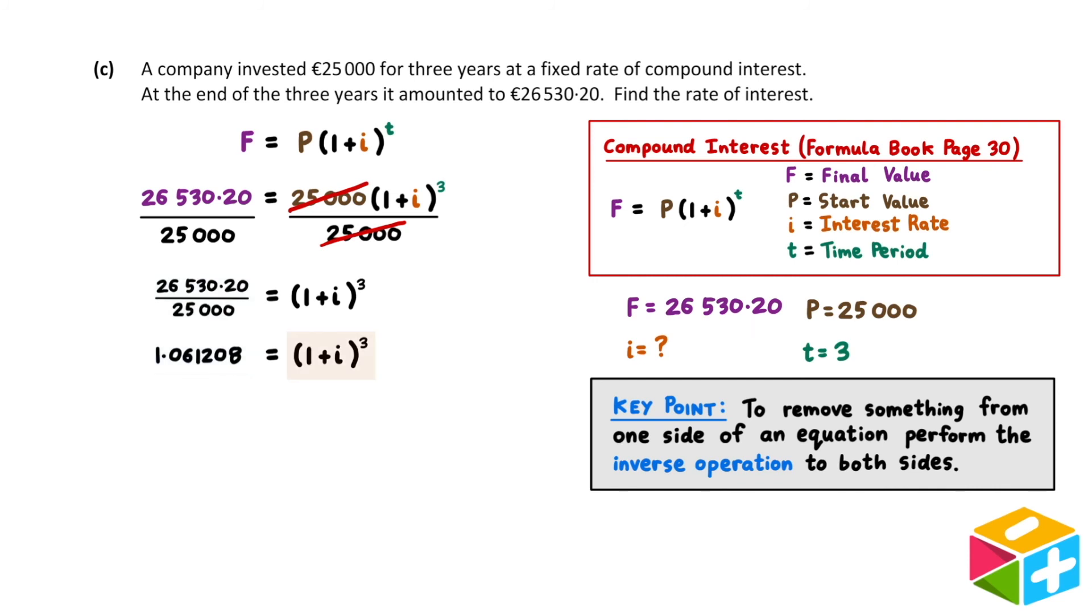We now have 1 plus i to the power of 3 on the right-hand side. The next thing to remove is the 3. This 3 is representing a power of 3. To cancel it off, we'll need to do the inverse operation. And the inverse of a power of 3 is a third root. So what we'll do is we'll find the third root of both sides.